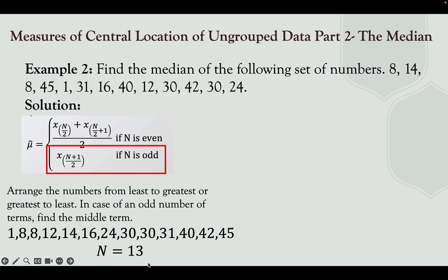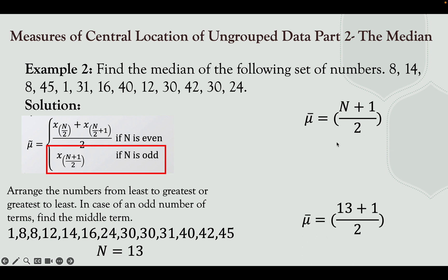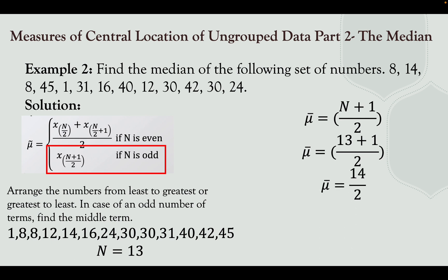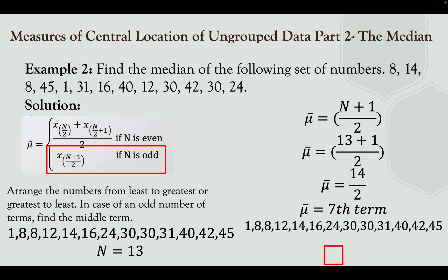Your n is 13. Always, in finding the median, arrange the data set from lowest to highest. Using the population formula for odd n: median = x sub (n+1)/2. We have 13 + 1 = 14, divided by 2 = 7. So the median is the 7th term, which is 24. Hence, the middle term is 24.